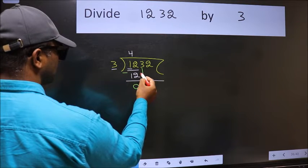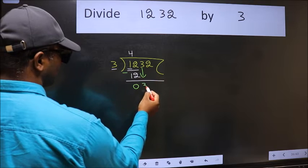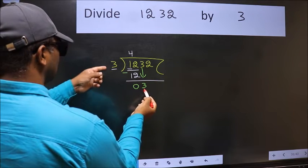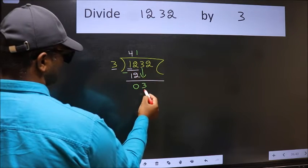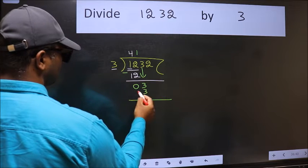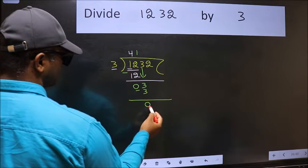After this, bring down the beside number. So 3 down. When do we get 3 in 3 table? 3 once 3. Now we should subtract. We get 0.